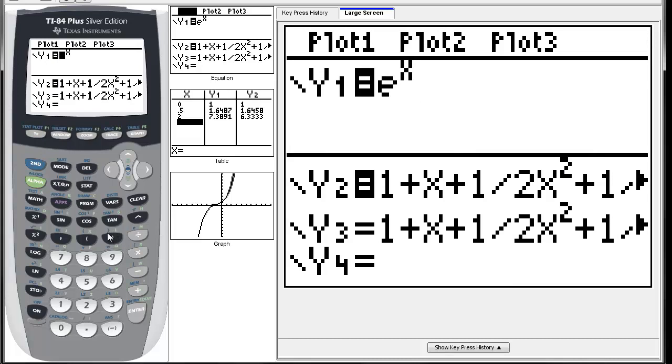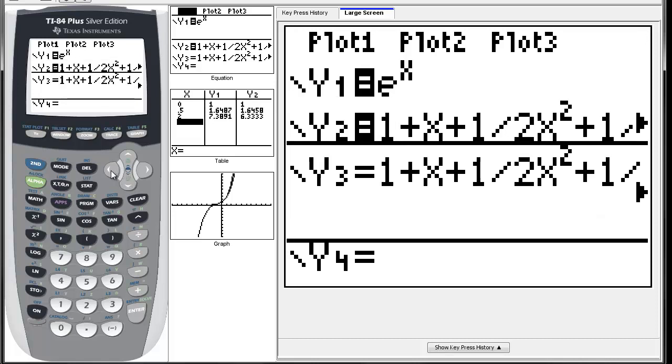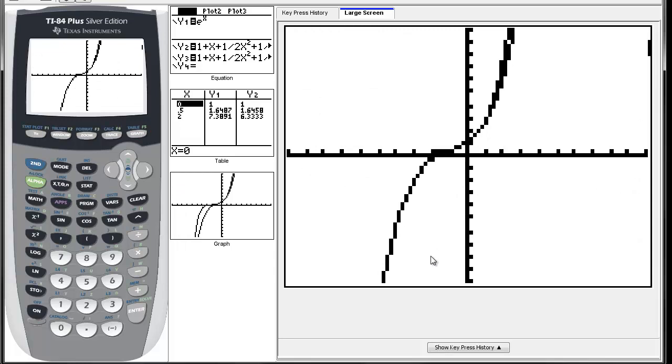What would happen if we did the seventh Maclaurin polynomial? Here it is - I've already typed it in. I'm going to select it and graph it. Give it a minute, it's a little slow. You can see we actually got a little bit more accurate over here.